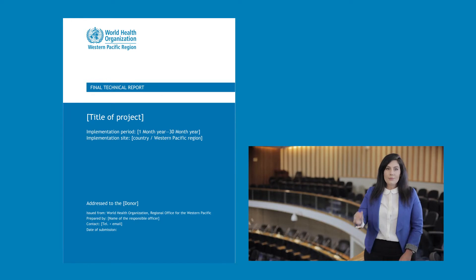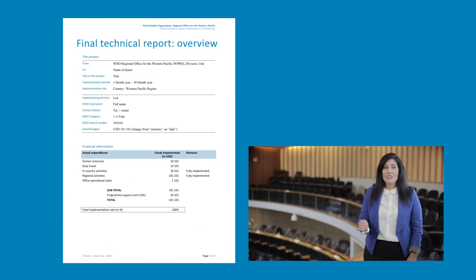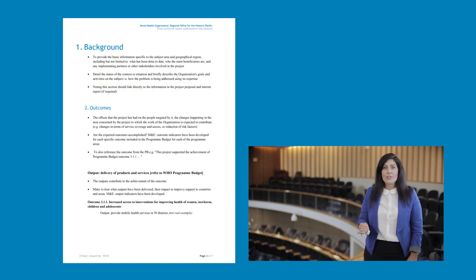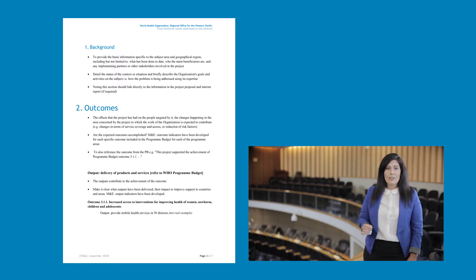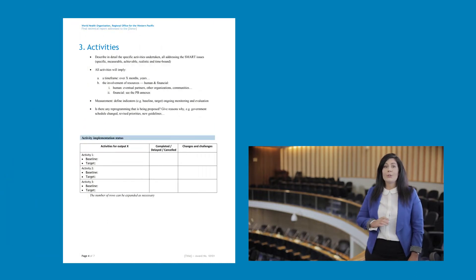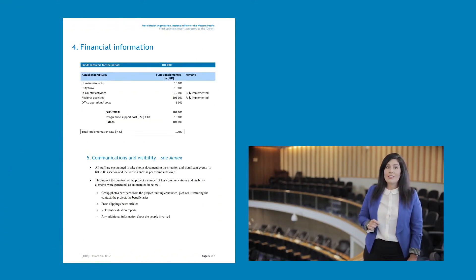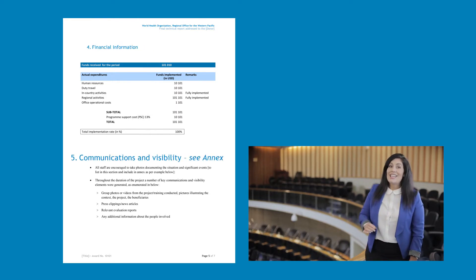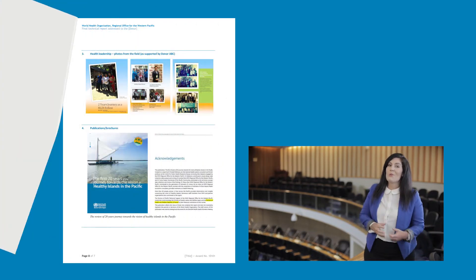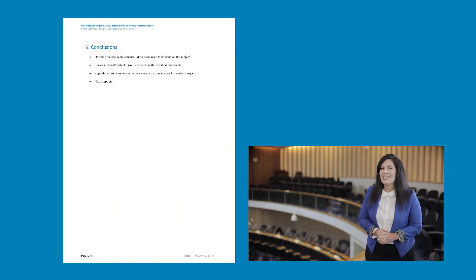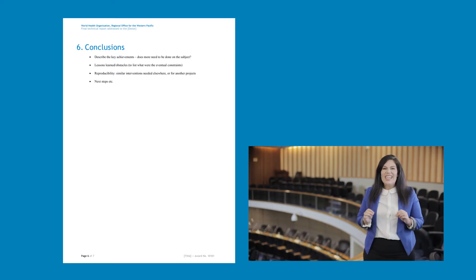For example, the final technical report template includes the following components: an overview of essential information; background of the subject area, context, issues and actions; the outcomes of the project as related to the program budget; the activities carried out including any changes or challenges; financial information or implementation of the funds; communications and visibility such as communication materials relating to the project, like photos, videos, news articles and brochures; and conclusions, which describe the key achievements, the lessons learnt and where relevant, the future steps.